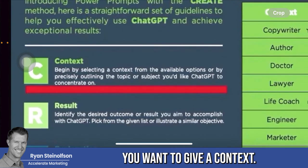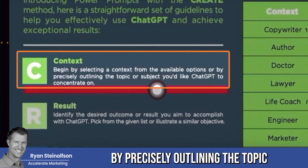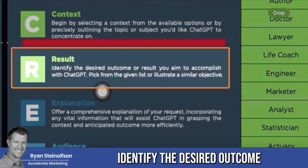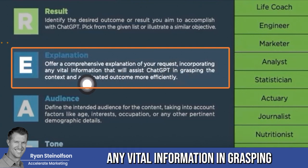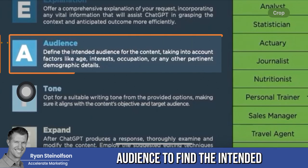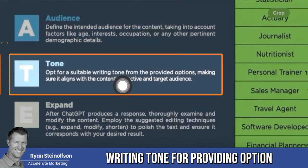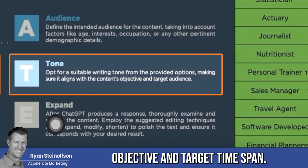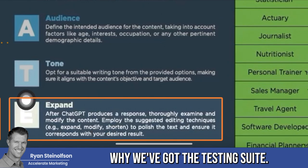So the first element is Context — begin by precisely outlining the topic or subject you'd like ChatGPT to concentrate on. The second is Result — identify the desired outcome you want to accomplish. Third is Explanation — offer a comprehensive explanation of your request, incorporating any vital information. Fourth is Audience — define the intended audience including age, interests, and occupation. Fifth is Tone — opt for a suitable writing tone that aligns with the content's objective and target audience. And sixth, Expand — after ChatGPT produces a response, you want to keep expanding, and that's why we have the testing suite.